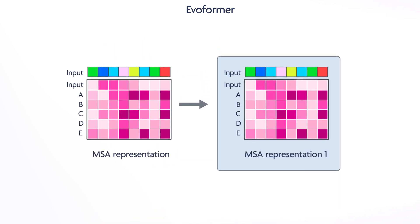For the MSA representation, the neural network prioritizes looking for row-wise relationships between residue pairs in the input sequence, before considering column-wise information that evaluates the importance of each residue in context of the other sequences.